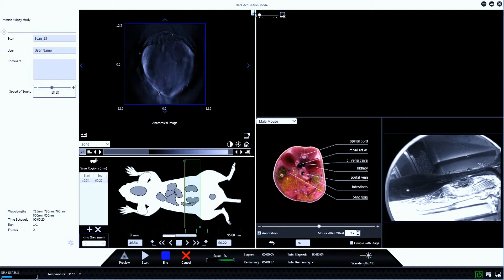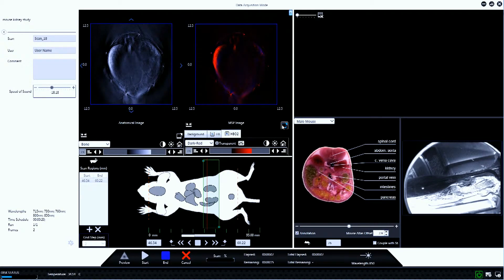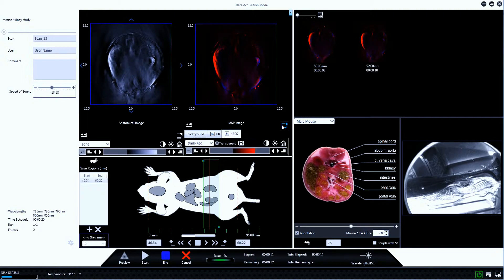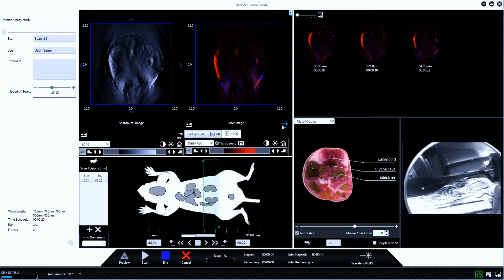During the acquisition, single-wavelength images are displayed in real-time. In the case of multi-wavelength acquisition mode, spectrally distinct image components can also be displayed in real-time.